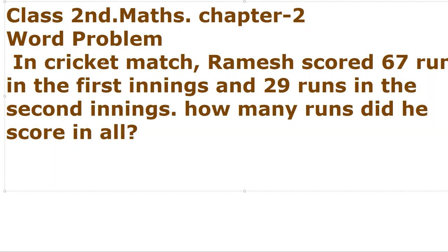In a cricket match, Ramir scored 67 runs in the first innings and 29 runs in the second innings. How many runs did he score in all? Ramir scored 67 runs in the first inning and 29 runs in the second inning. How many total runs did he score in the innings?